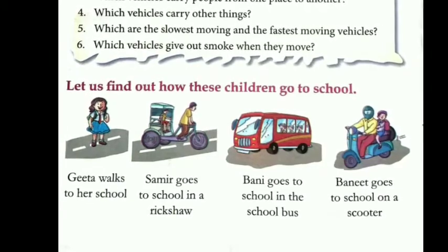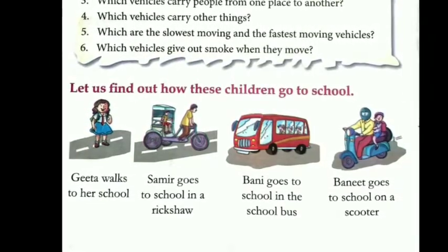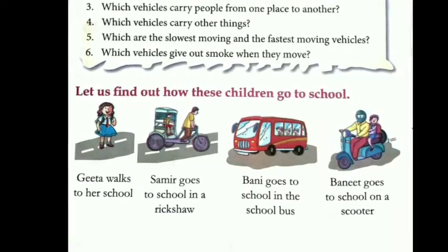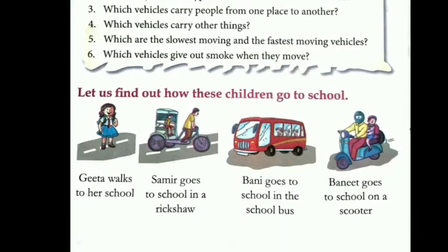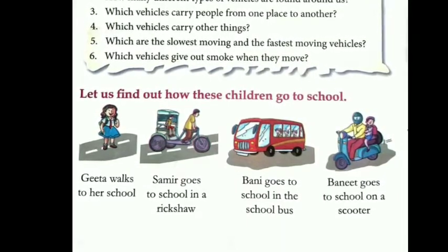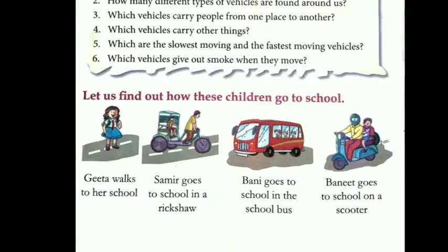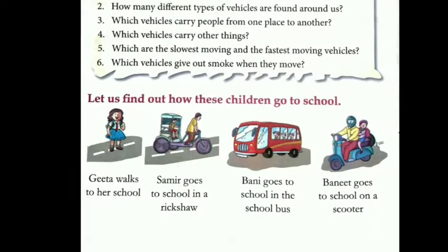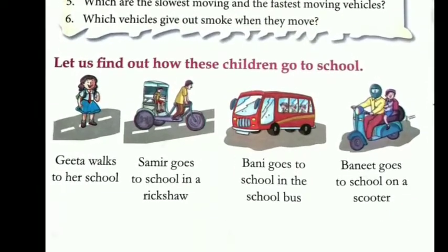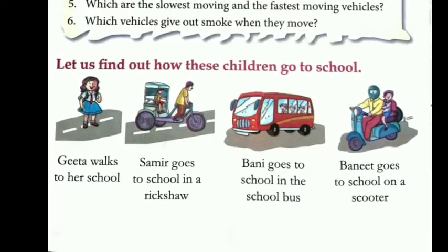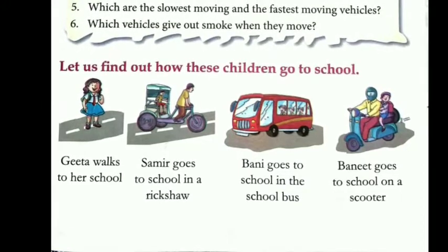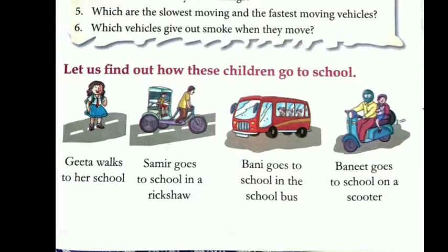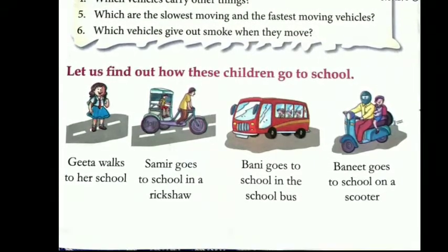Let us find out how these children go to school. Gita walks to her school — jo Gita hai woh walk karke apne school jahri hai. Samir goes to school in a rickshaw. Bani goes to school in the school bus. And the last is Baneet — Baneet goes to school on a scooter, yani ke Baneet apne papa ki scooter par baith karke school ja raha hai.